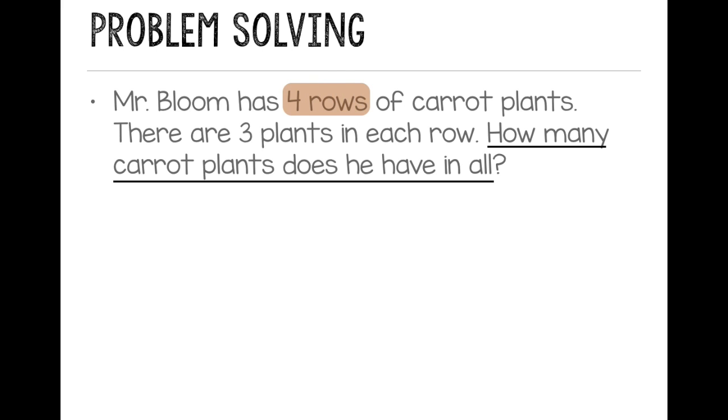I see that he has 4 rows, and there's 3 plants in each row. And I want to know the number in all, so I'm looking for the total. So I'm going to make an array to model. So I want to draw 4 rows, and then I'm going to put 3 plants in each row.